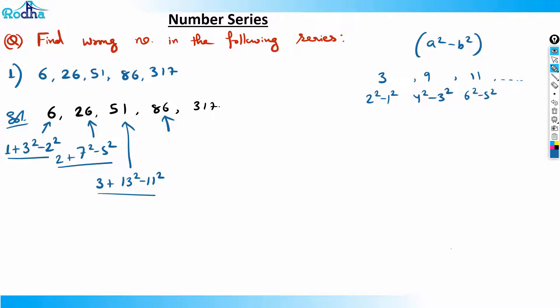The pattern adds an incrementing counter: plus 1, plus 2, plus 3, plus 4. So the next term uses primes 19 and 17: 19² - 17² = 361 - 289 = 72, plus 4 = 76. Therefore, 86 is the wrong number — it should be 76.